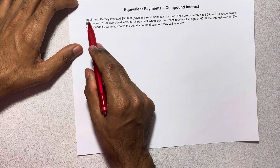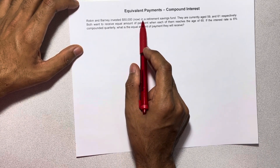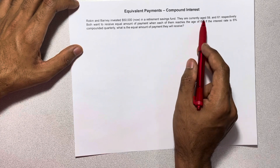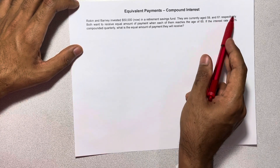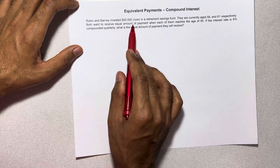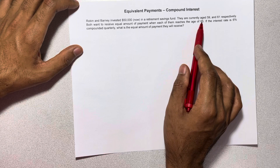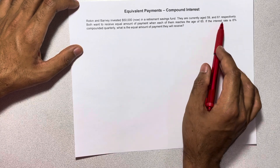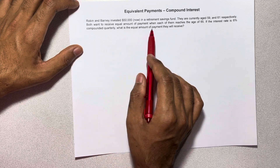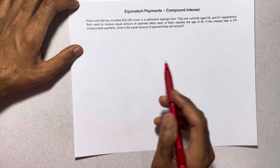Robin and Barney invested fifty thousand dollars now in a retirement savings fund. They are currently age 59 and 61 respectively. Both want to receive an equal amount of payments when each of them reaches the age of 65. If the interest rate is six percent compounded quarterly, what is the equal amount of payment they will receive?